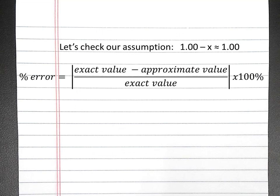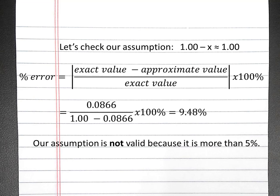We have to check whether or not our assumption is valid, so we'll calculate the percent error. When we calculate percent error, we'll come up with 9.48 percent. Because our error is greater than 5%, our assumption is not valid. It does not meet the 5% rule.